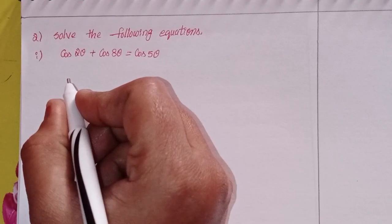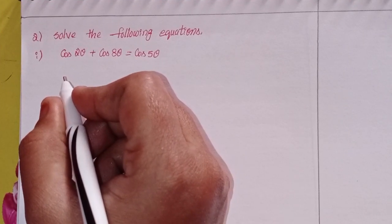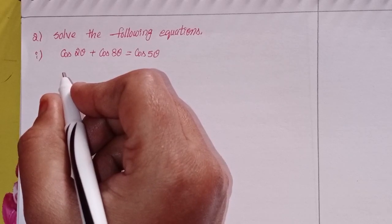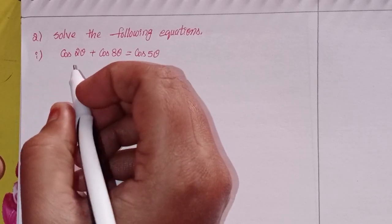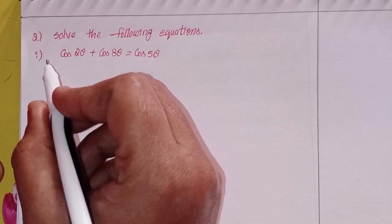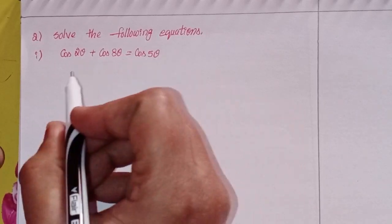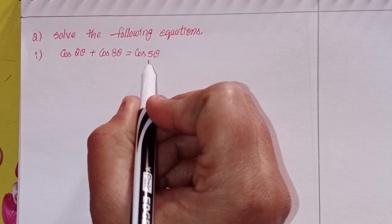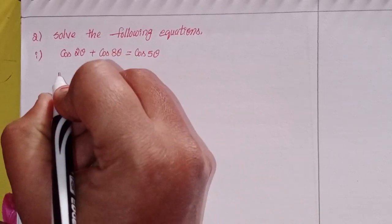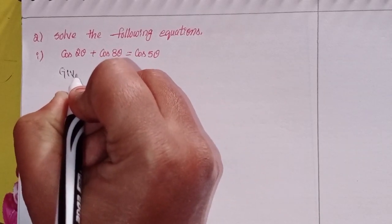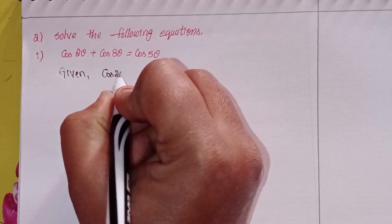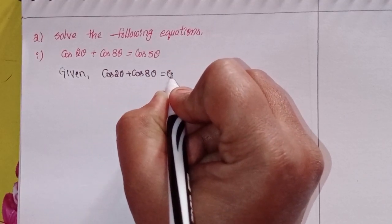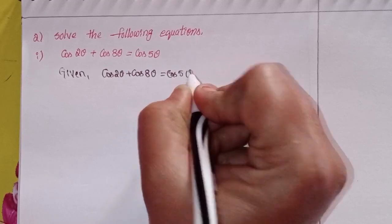Hi viewers, this is Shahin and welcome to my channel. Today we will discuss intermediate first year 1A, chapter number 7, trigonometric equations, exercise 7A, third Roman, second problem. Solve the following equations: first one, cos2θ plus cos8θ equals cos5θ. Given: cos2θ plus cos8θ equals cos5θ.